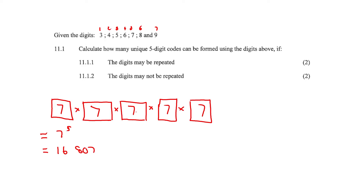If you thought we're using a factorial, think again. We only use the factorial when the digits may not be repeated — so this is our factorial question. I'm screaming at you because there's an exclamation mark!